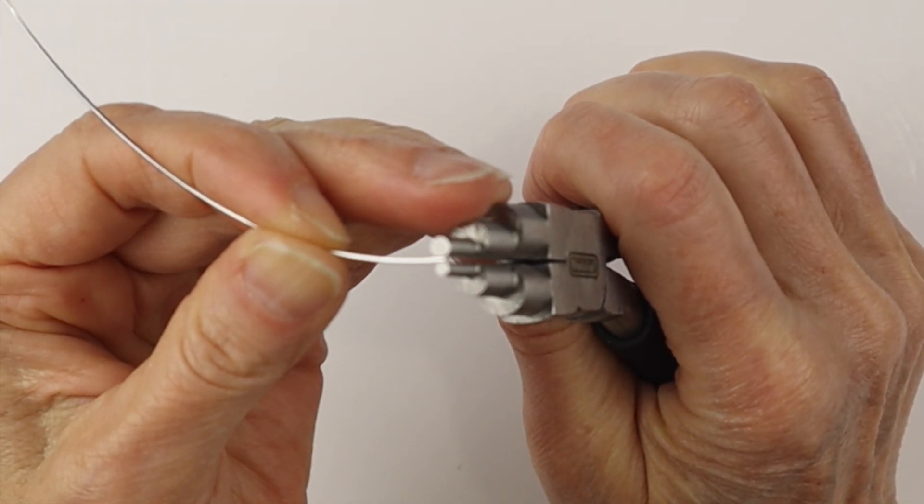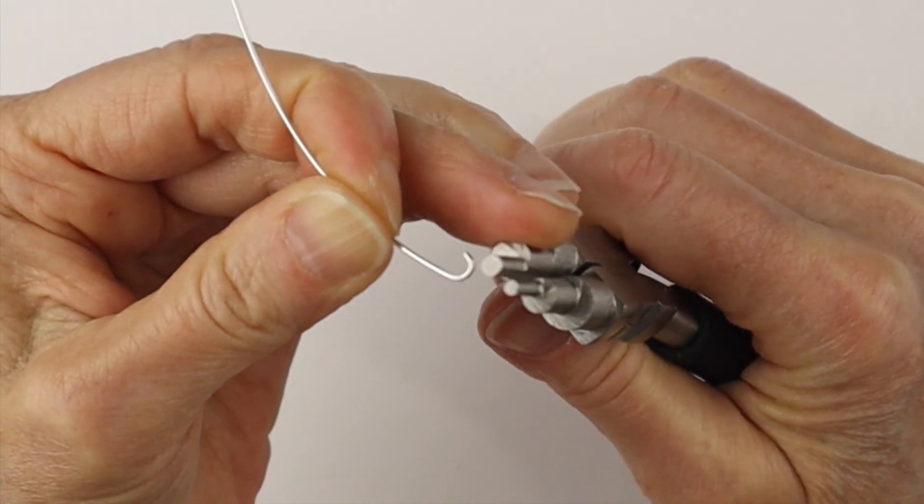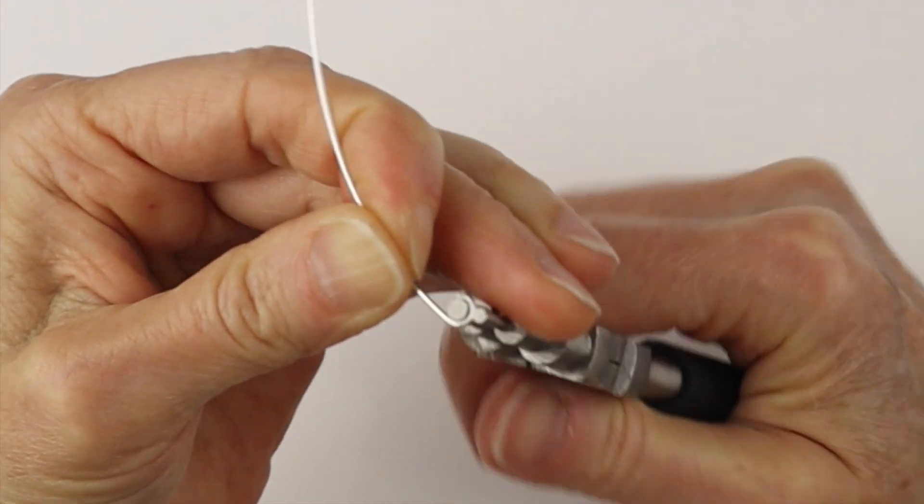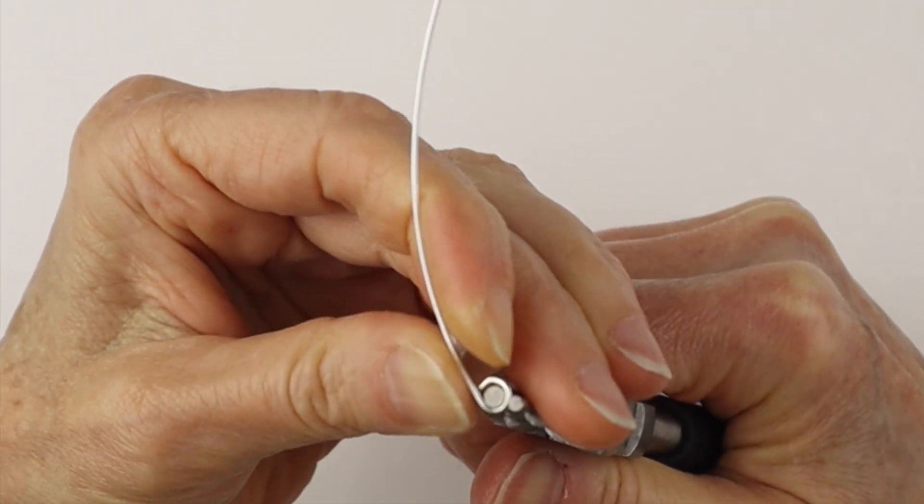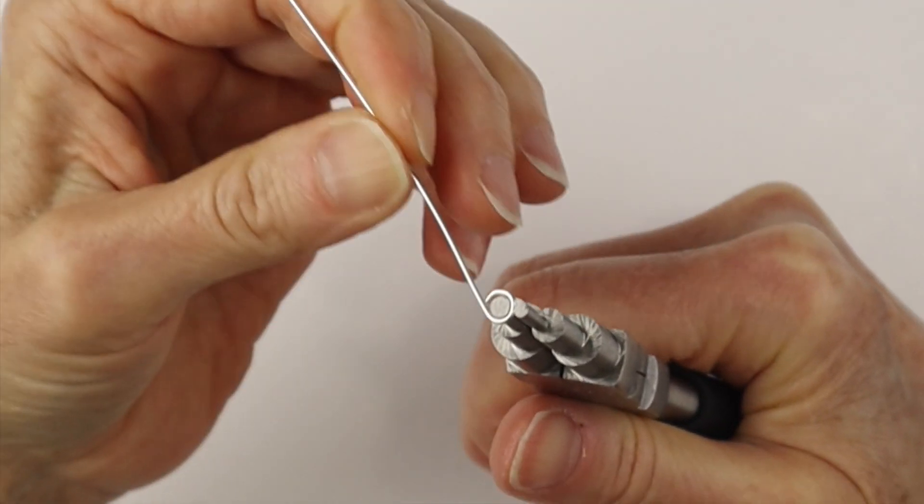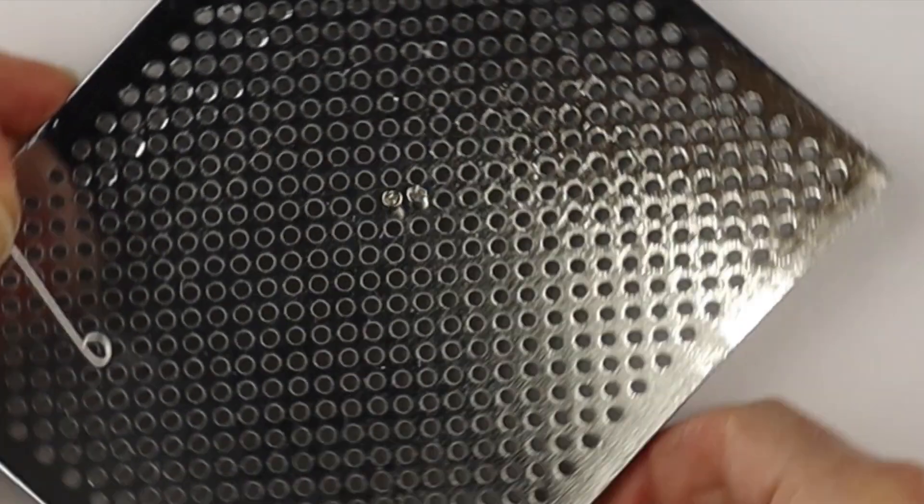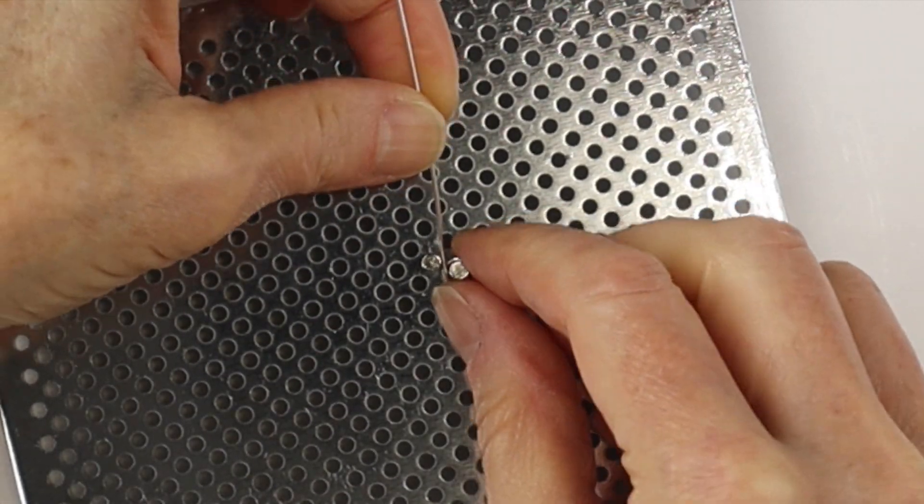We are going to start by making a loop on the end of the wire using the Beadalon bail making pliers. So we'll just make a little loop and then we are going to place that loop on the first peg on the jig.